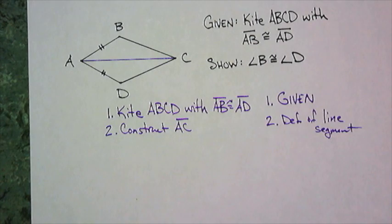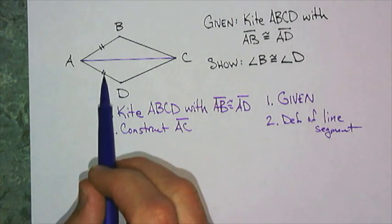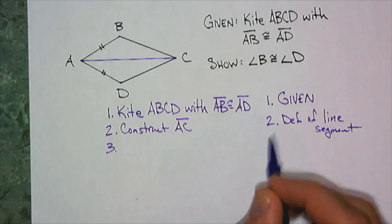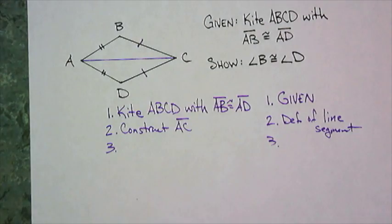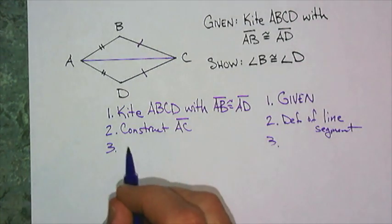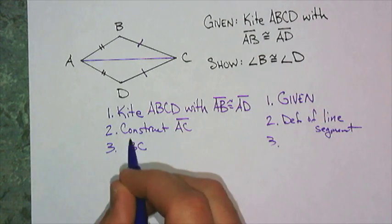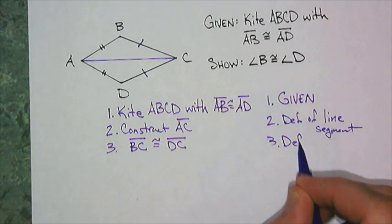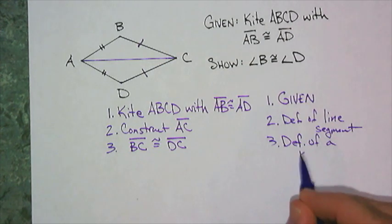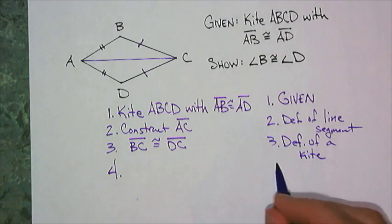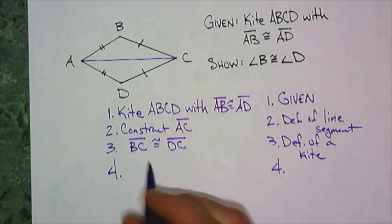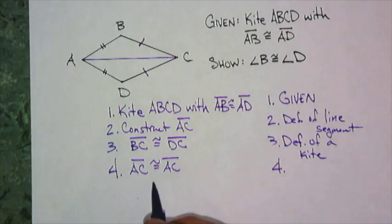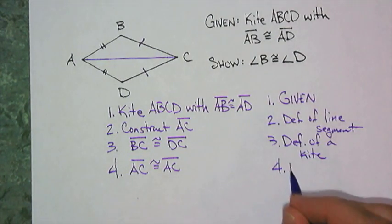Now, let's go on to proving these triangles congruent. At this point, I have a side. I have another side, actually. Don't I know that this side must be congruent to this side? And yes, I do. So, I'm going to say BC is congruent to DC. And that's by the definition of a kite. Lastly, I'm going to say AC is congruent to AC. That's reflexive property.